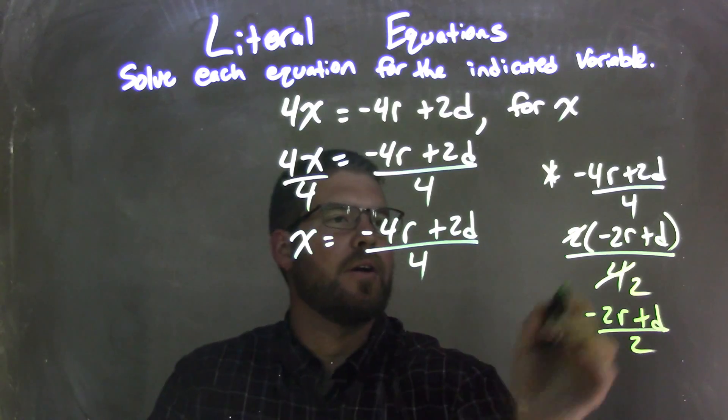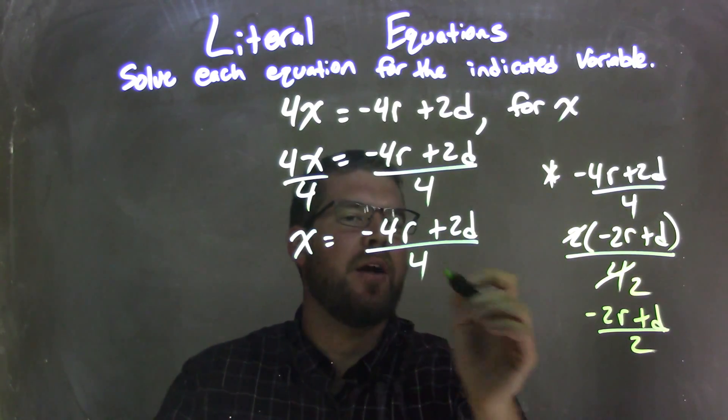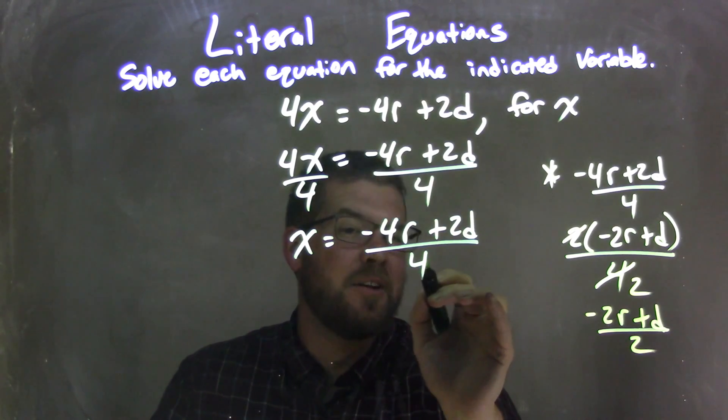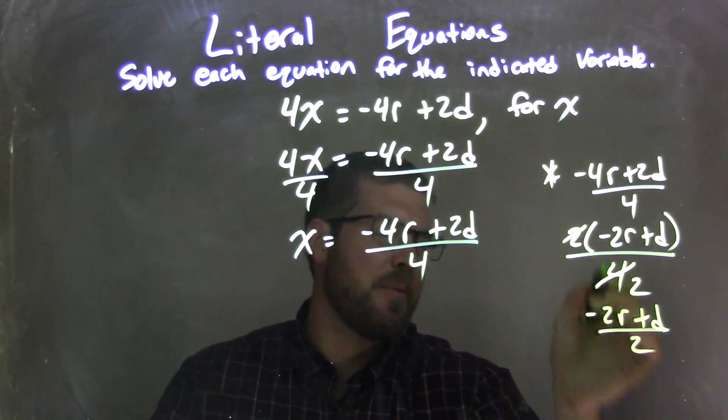And so that simplifies to negative 2r plus d all over 2. That's what I'm going to do here. All that step kind of goes on there. Sometimes what people like to see is all these can be divided by 2, and they kind of do this quick step, which is essentially the same thing that's going on here.